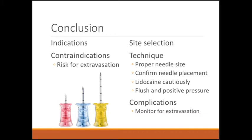In conclusion, always consider IO catheter placement, especially in code situations — we really shouldn't be placing non-sterile central venous catheters in the groin during codes given the prevalence and ease of IO catheter placement. For contraindications, always ask yourself: if I put a needle into this bone, will the fluid leak out into the subcutaneous tissue? If so, choose another bone. Remember the trade-offs between humerus and tibial selection, always select the proper needle size, and confirm needle placement by aspirating blood. Consider lidocaine cautiously to reduce pain in conscious patients. Flush your catheter and use positive pressure, and always monitor for extravasation — especially in the first hour of infusion — to make sure fluids aren't going into subcutaneous tissue.